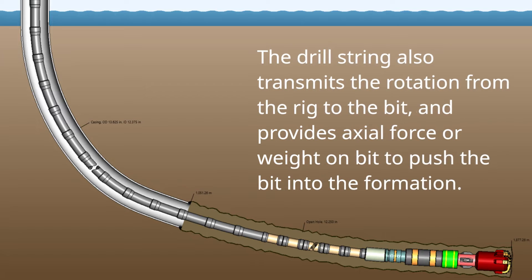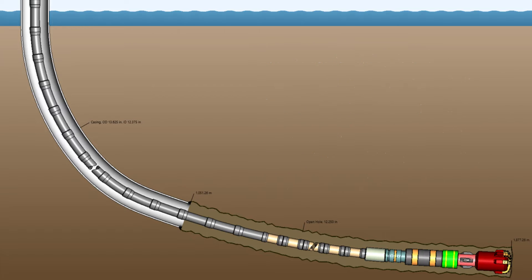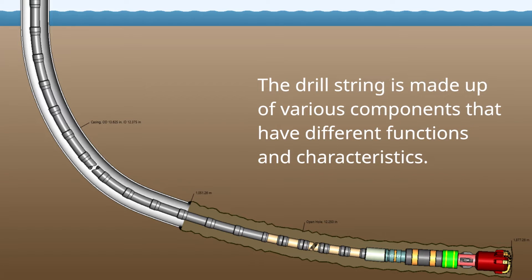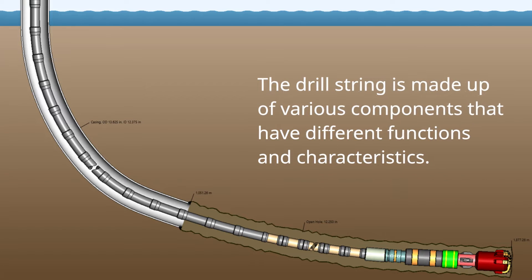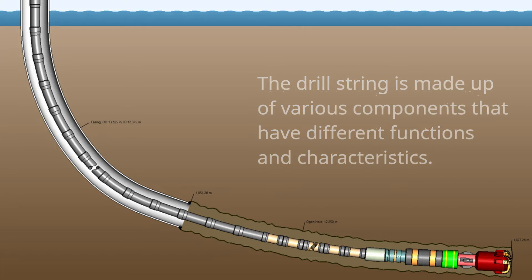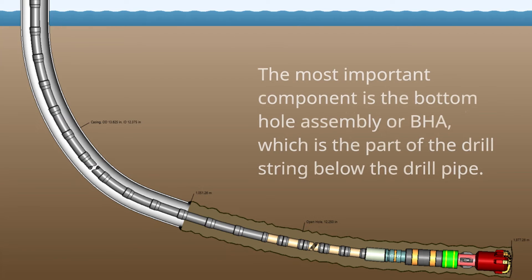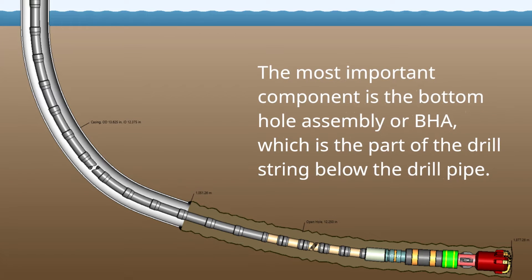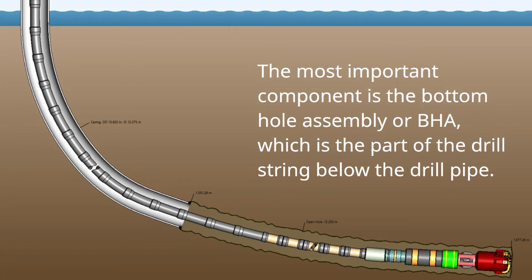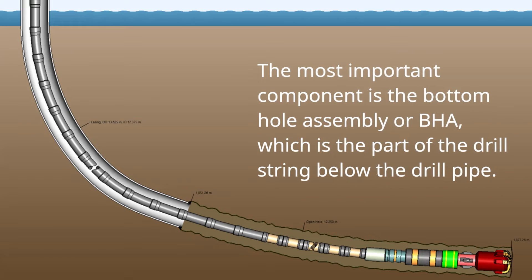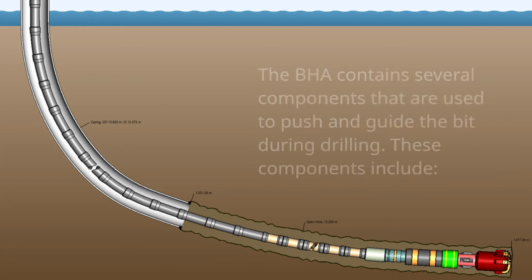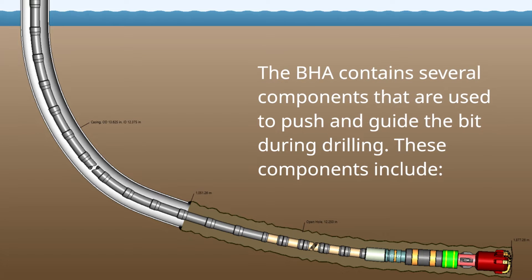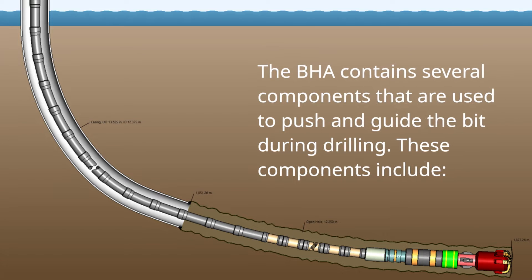The drill string also transmits rotation from the rig to the bit and provides axial force, or weight on bit, to push the bit into the formation. The drill string is made up of various components with different functions and characteristics. The most important component is the bottom hole assembly, or BHA, which is the part of the drill string below the drill pipe.